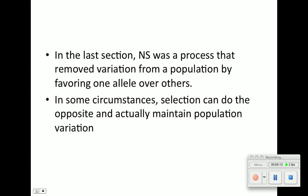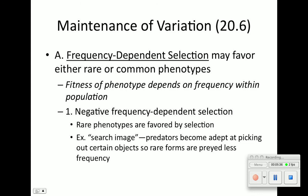Chapter 20, Part 3. In the last section, natural selection was a process that removed variation from a population by favoring one allele over others. But we know that in some circumstances, selection can do the opposite — it can actually help maintain population variation. So we're going to talk about how selection can maintain population variation. We look at frequency-dependent selection, where the fitness of a phenotype depends on the frequency of its occurrence within that population.